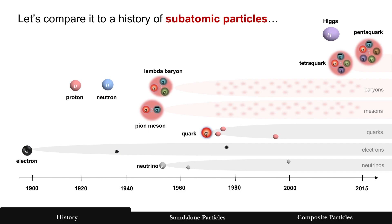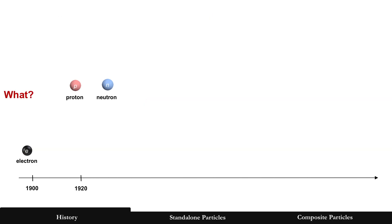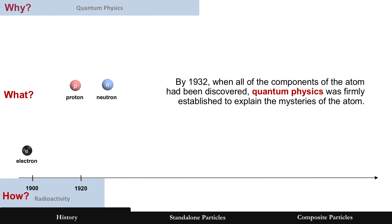Now let's compare this to subatomic particles. This is a really busy chart, so we're going to break it down, starting with the elements of the atom. There will be three sections: what was discovered, how it was discovered and measured, and why — trying to answer why something is behaving a certain way. Many different experiments in the late 1800s and early 1900s — the double-slit experiment, the photoelectric effect — and quantum physics evolved to help answer some of these questions.